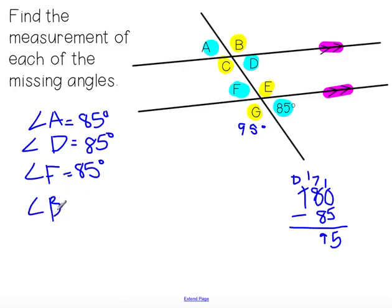So angle B is 95 degrees. And notice I'm putting in those degree symbols. Angle C is 95 degrees. Angle E is 95 degrees. Angle G is 95 degrees.